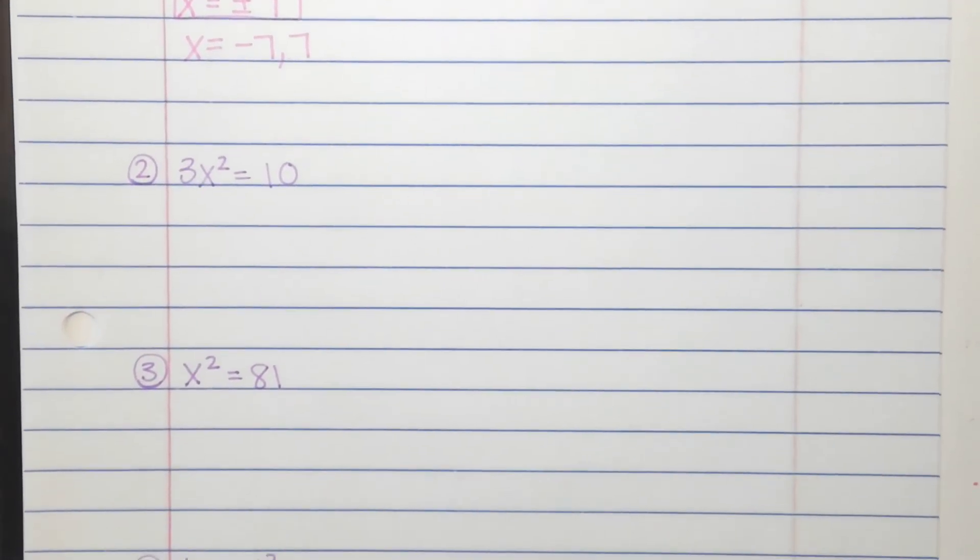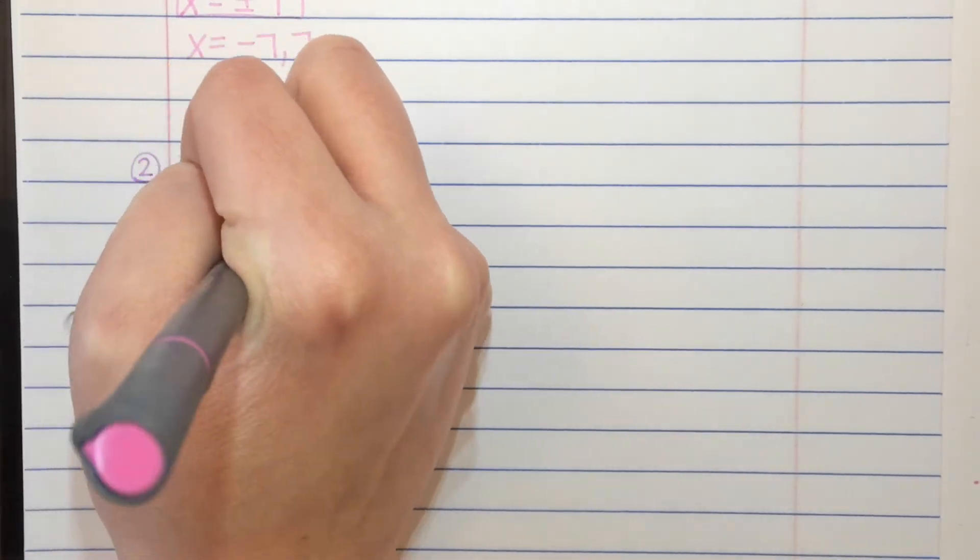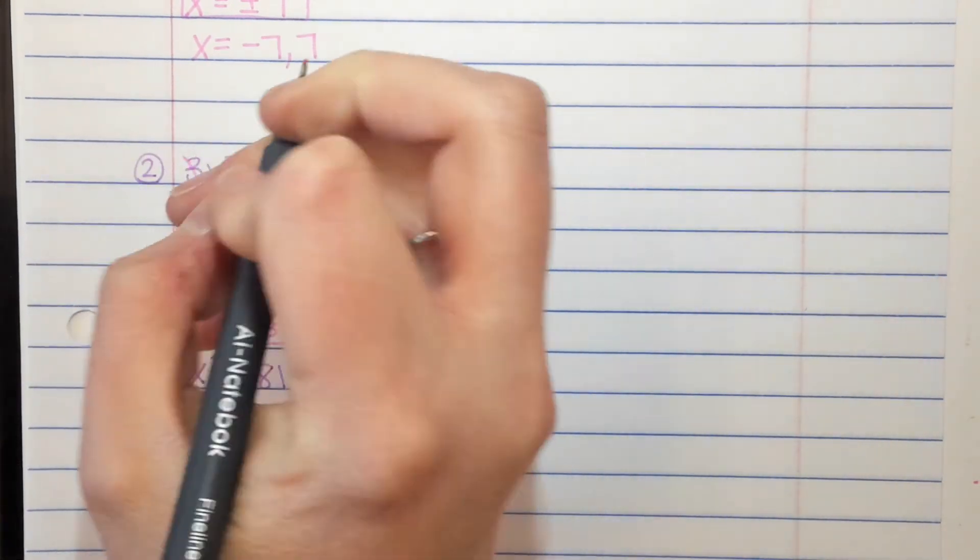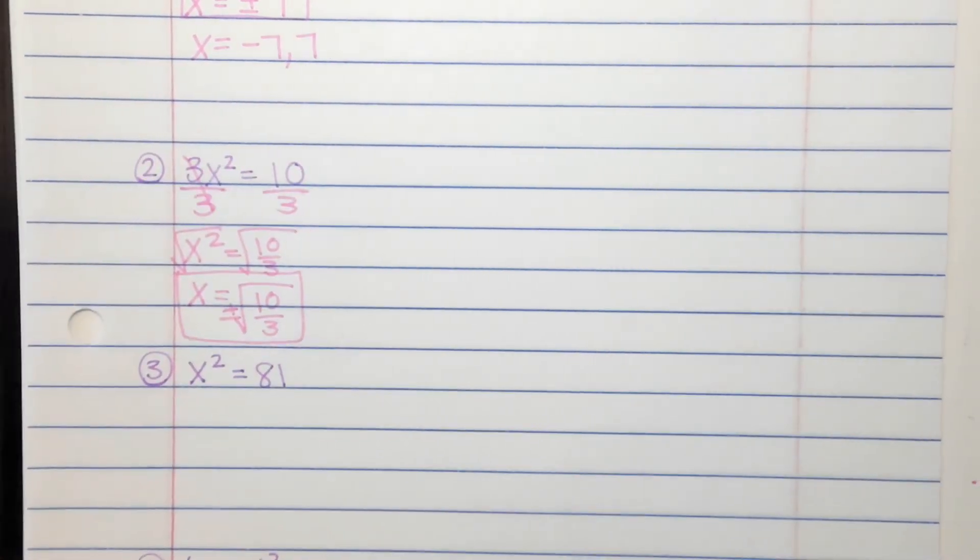Number two, we have 3x squared equals 10. We can divide both sides by 3 and get x squared equals 10 thirds. Square root both sides. That gives us x equals plus or minus the square root of 10 thirds.